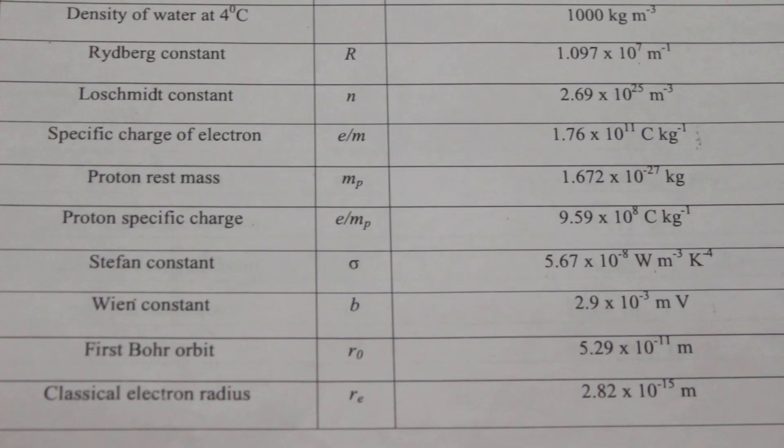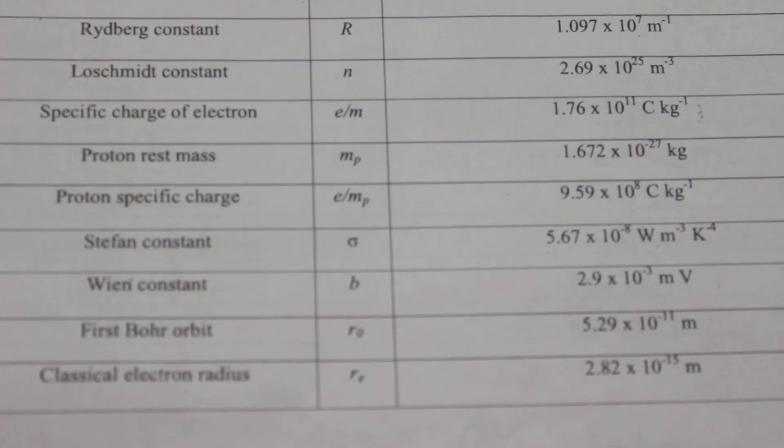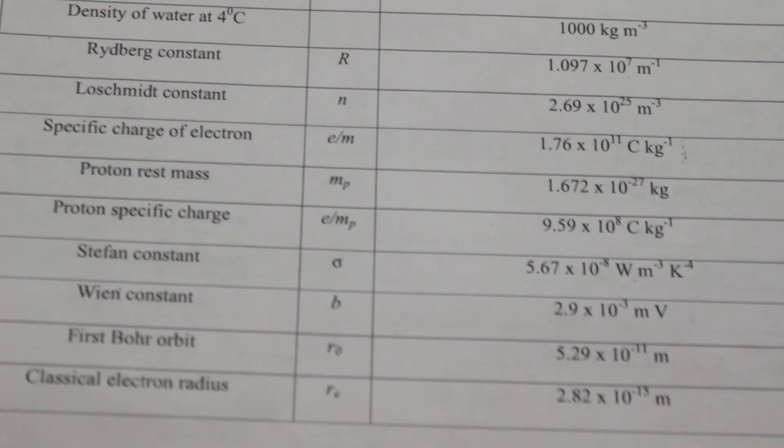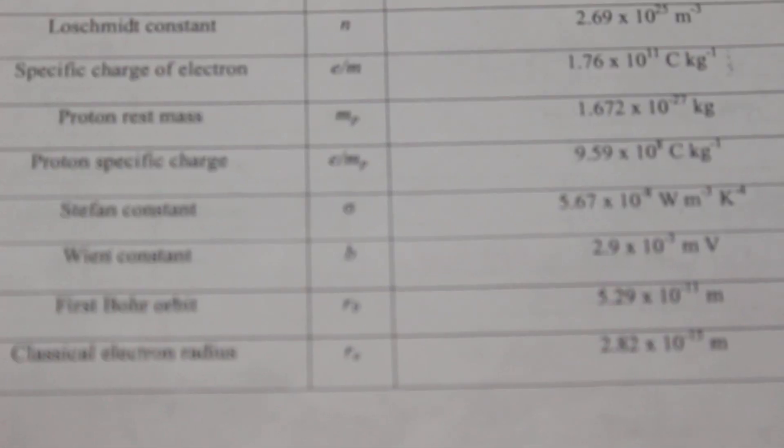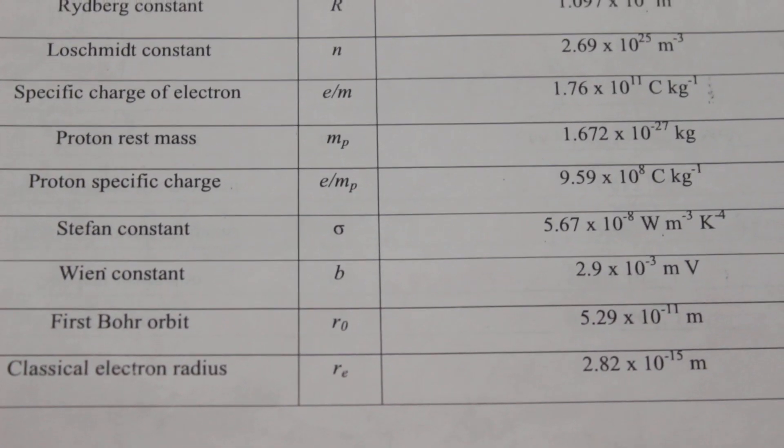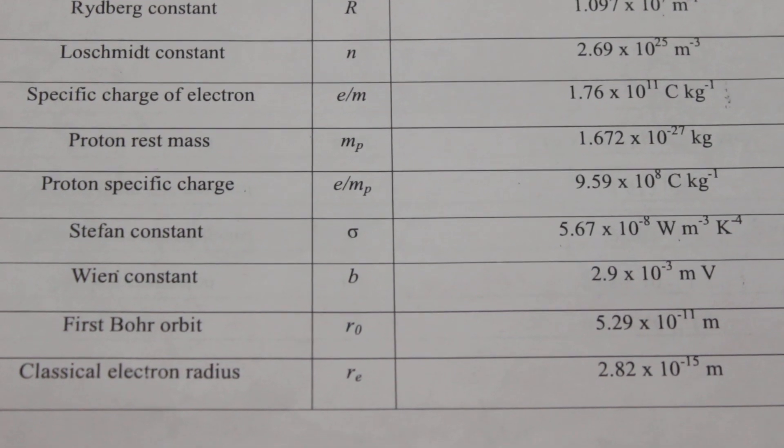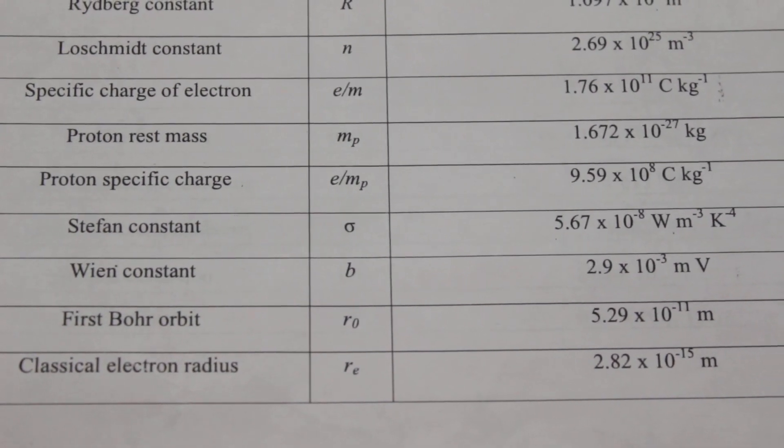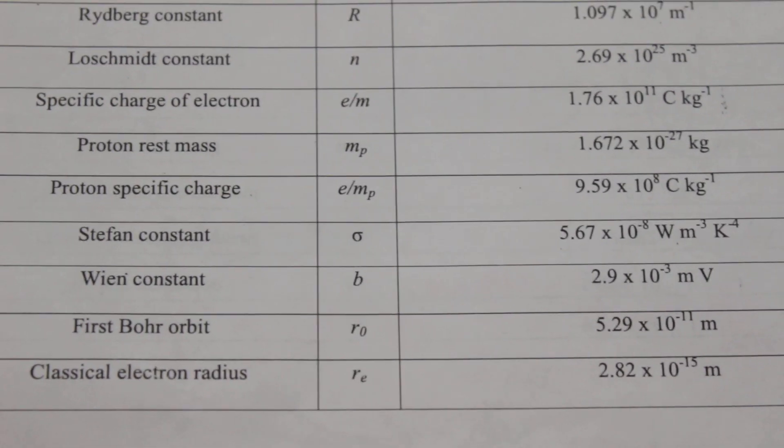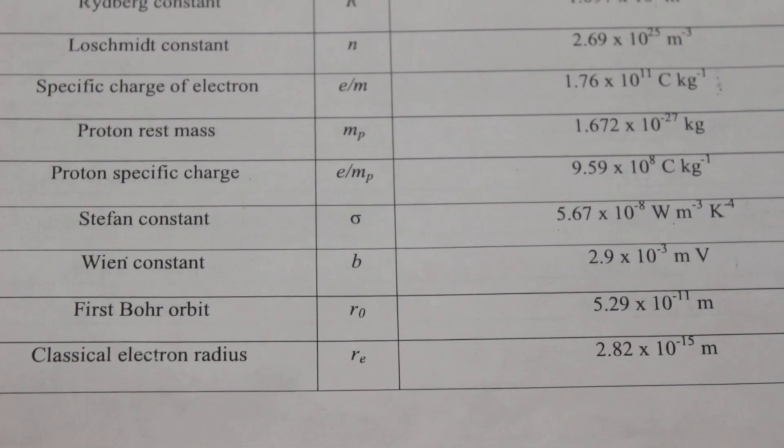1.76 times 10 to the power 11. Proton rest mass, M subscript p, p as in proton, 1.672 times 10 to the power minus 27 kg, that is mass of proton. Proton specific charge, that is proton's charge by proton's mass, that is 9.59 times 10 to the power 8. Stefan's constant sigma, 5.67 times 10 to the power minus 8.